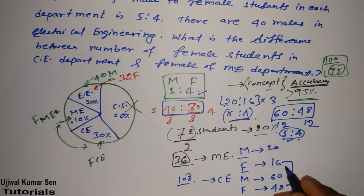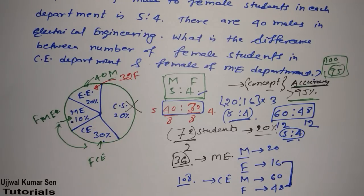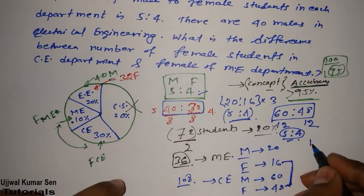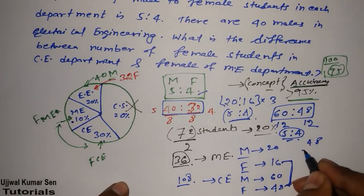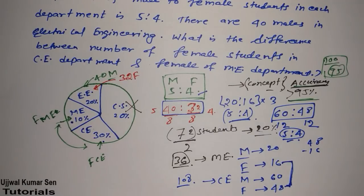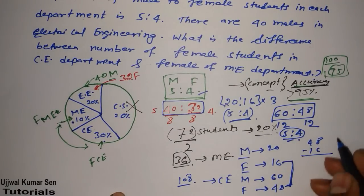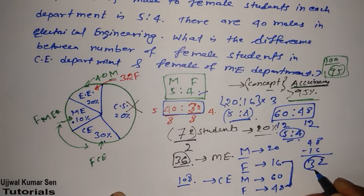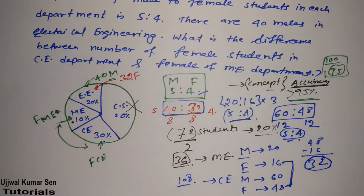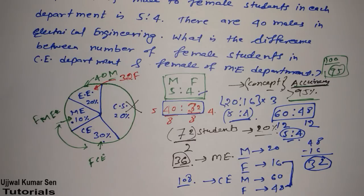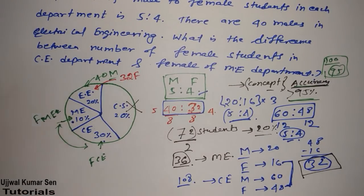We need to find the difference between 48 (civil engineering females) and 16 (mechanical engineering females). So 48 minus 16 equals 32. The answer to this question is 32.